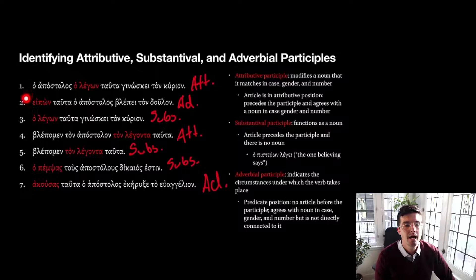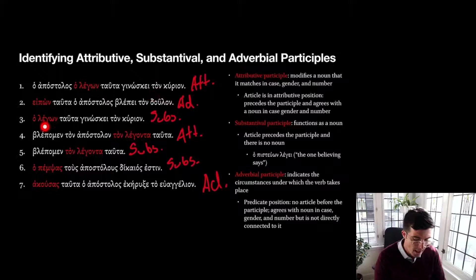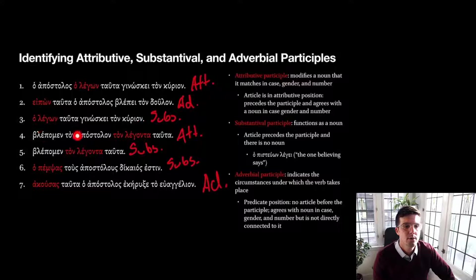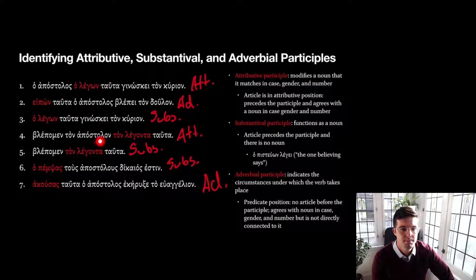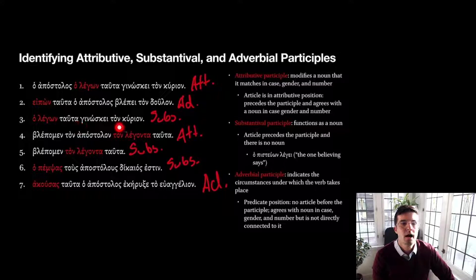And notice this is an aorist participle, so this action was completed and then the action of the verb happened. So this should probably be translated 'after saying these things, the apostle saw the slave.' 'Ho legōn' — no other noun there, we have the article before the participle, so we have a substantival: 'the one saying these things knows the Lord.' Here we have 'ton legonta' modifying 'ton apostolon,' matching it in case, gender, and number — both accusative masculine singular, this one taking third declension endings as a participle and this one a noun taking second declension endings. So it's an attributive participle: 'we see the apostle who is saying these things.'